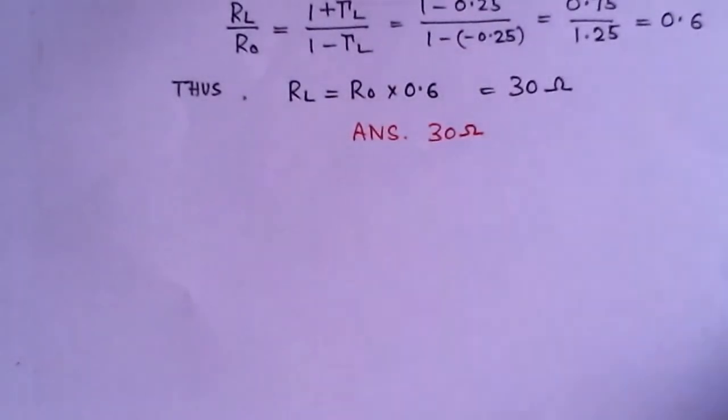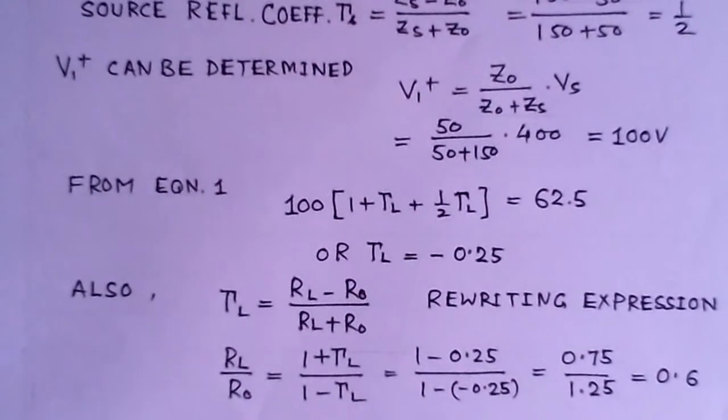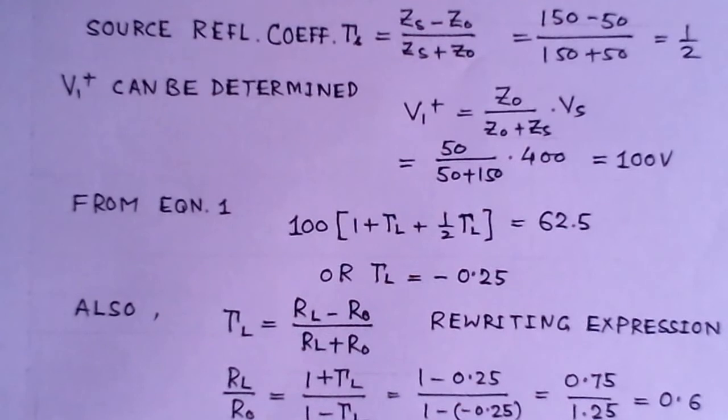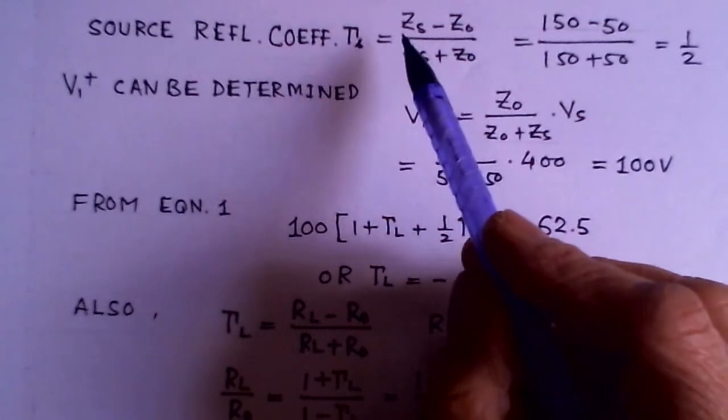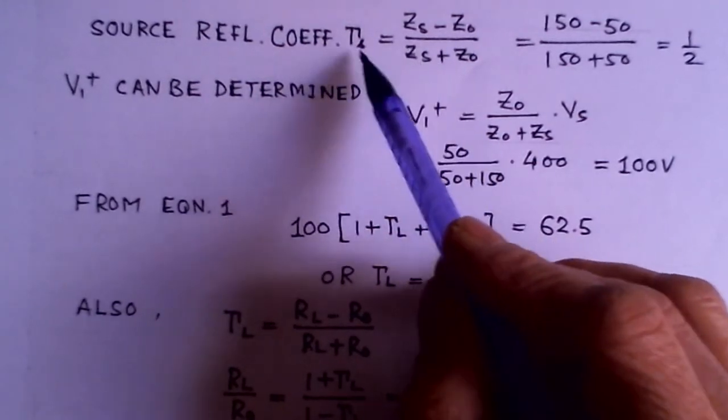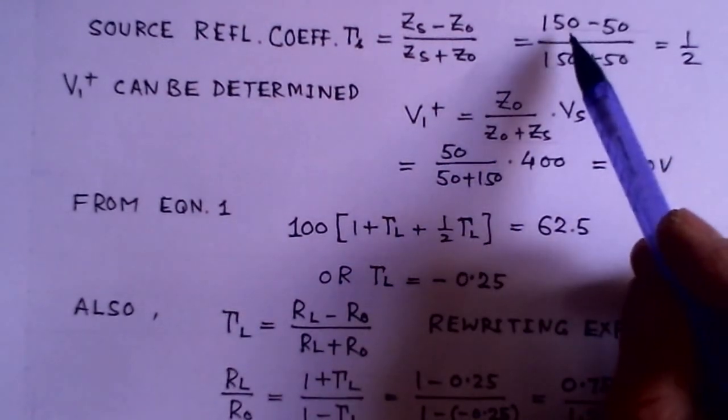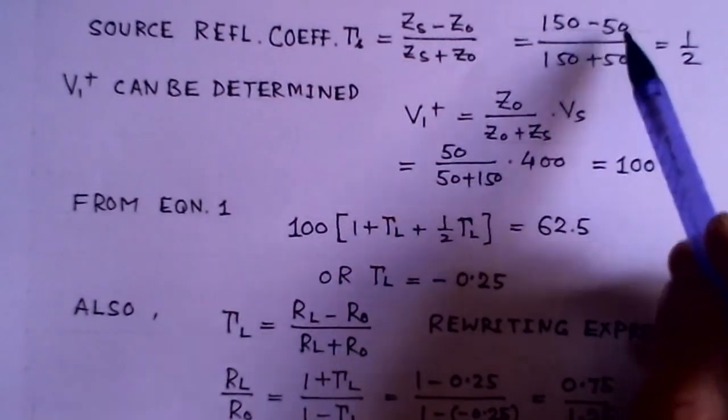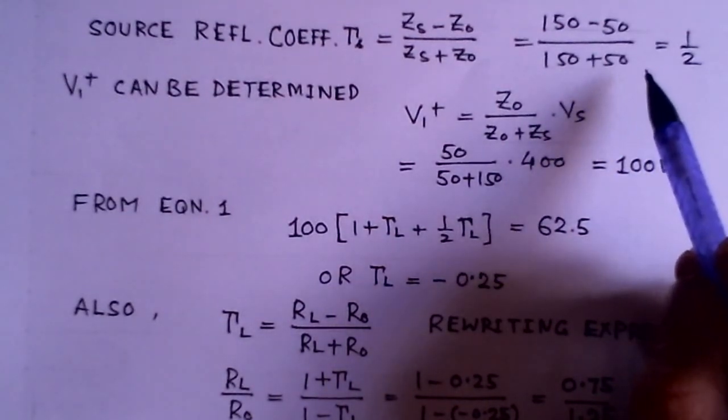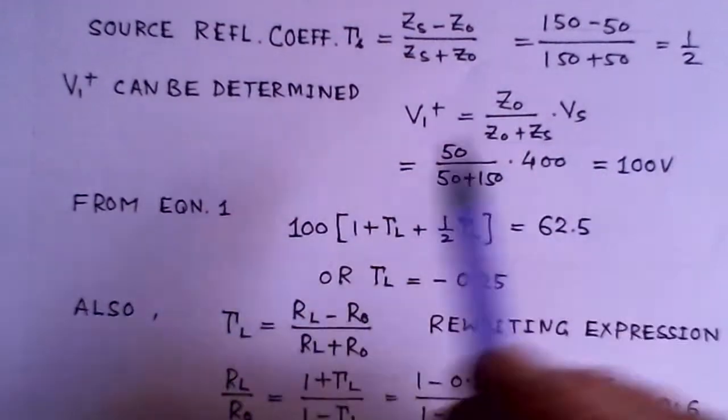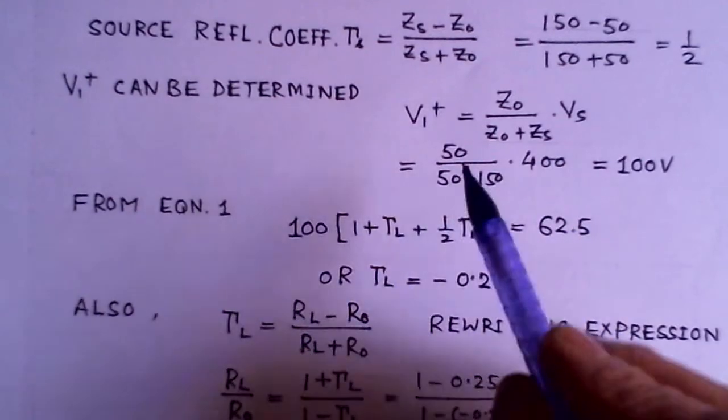If we try to find the source reflection coefficient, we can find the source reflection coefficient. This would be given as usual relation. Gamma S will be given ZS minus Z0 over ZS plus Z0. And we know that source is 150 ohms minus 50, 150 plus 50. So source reflection coefficient is half.